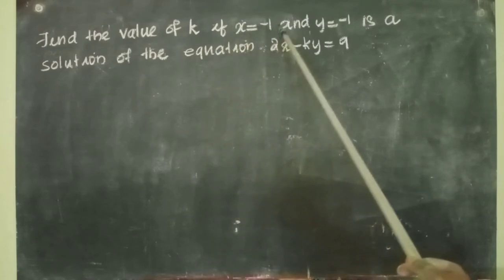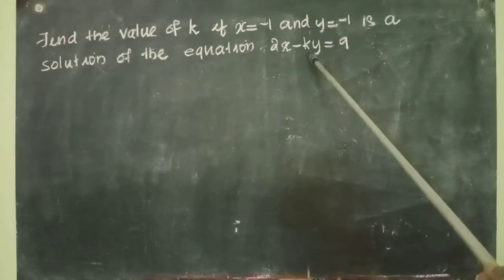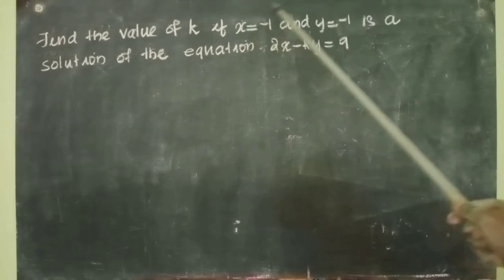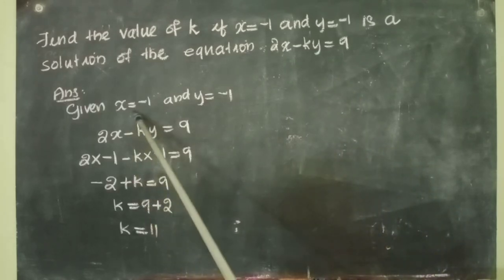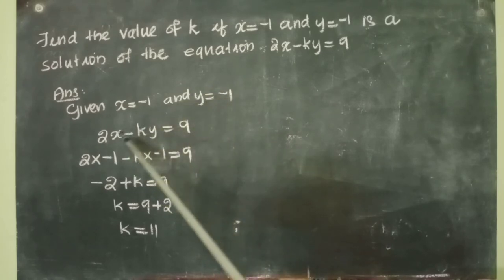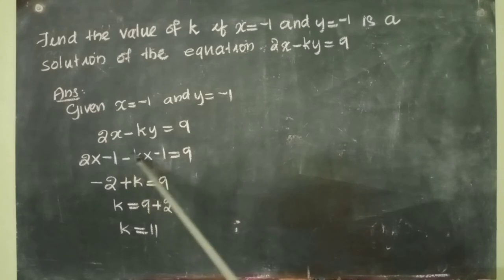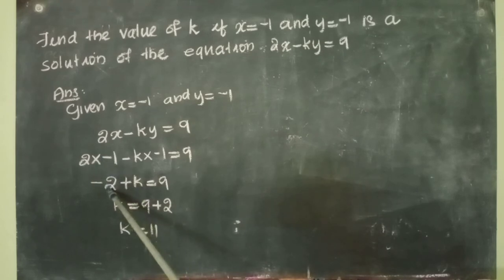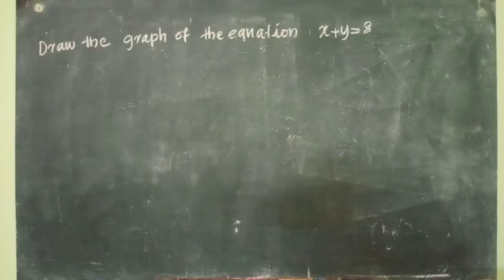Next question: find the value of k if x equal to minus 1 and y equal to minus 1 is a solution of the equation 2x minus ky equal to 9. Substituting: 2 into (minus 1) minus k into (minus 1) equal to 9. Be very careful about negative integers — minus 2 plus k equal to 9, so k equal to 9 plus 2, that is k equal to 11.